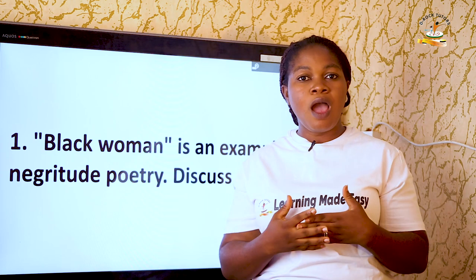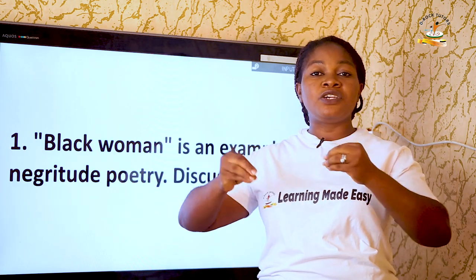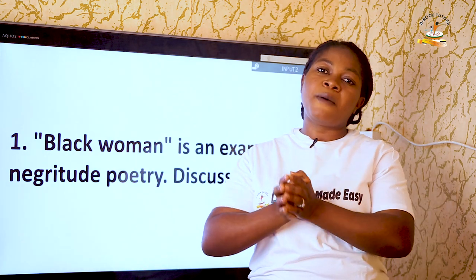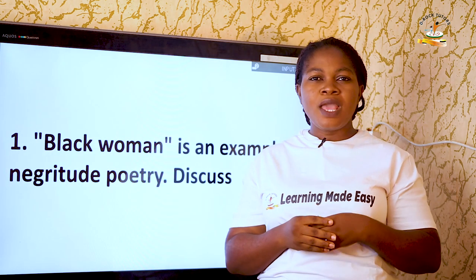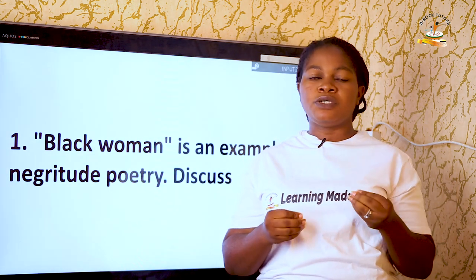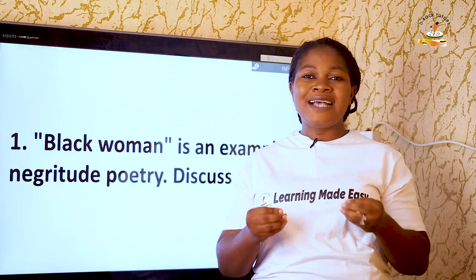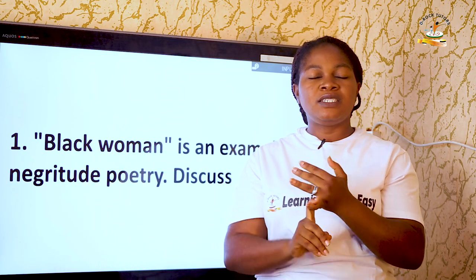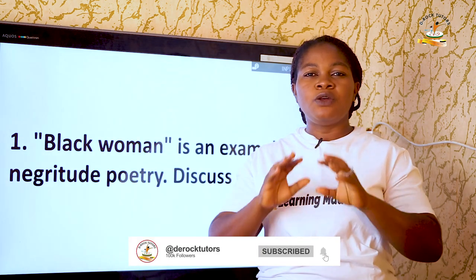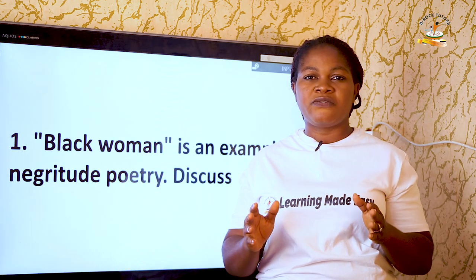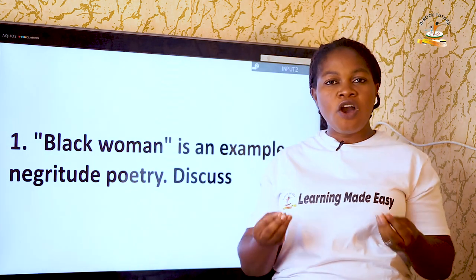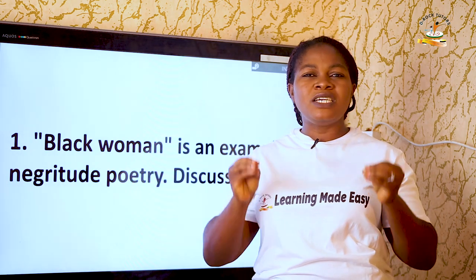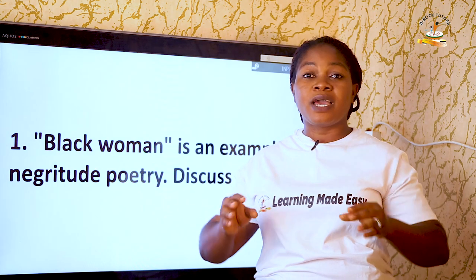The poet talked about our beauty, our tenderness, how caring we are, and the different elements of our culture — including the drum played in a particular part of Senegal. When we talk about negritude, Léopold himself described it as a form of fighting against anything that is not African — their culture, their dressing, anything that works against Africa as a culture.